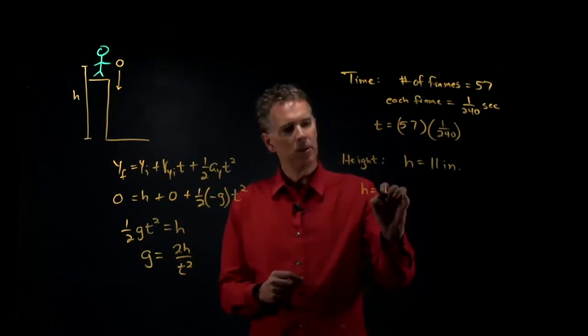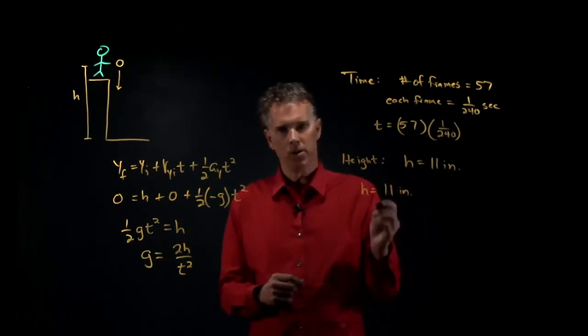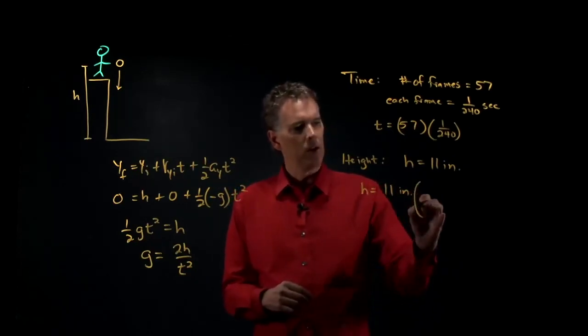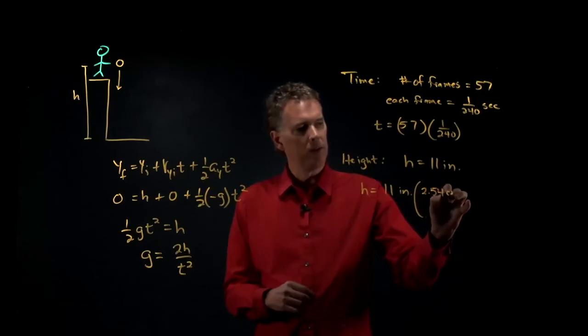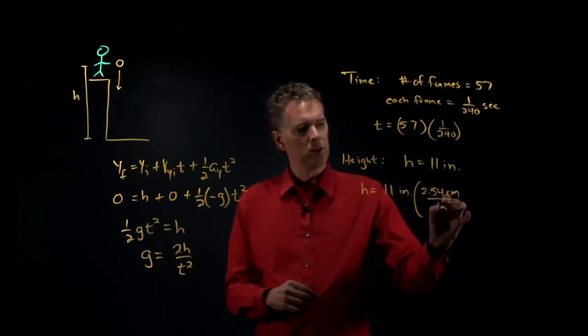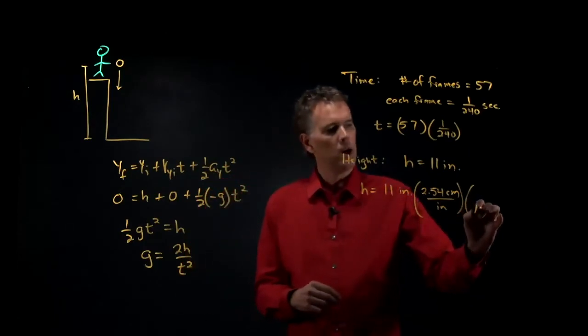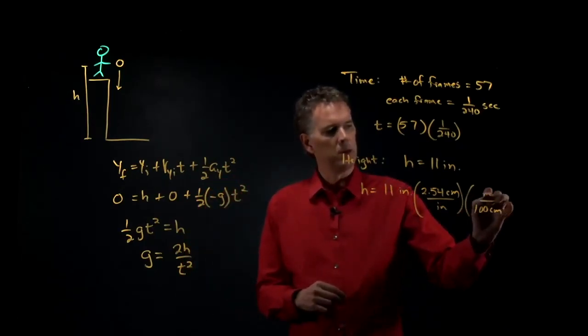Anytime you convert from one unit to another, you just need to multiply by 1. I know there are 2.54 centimeters per inch, and there are 100 centimeters in a meter.